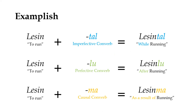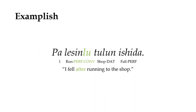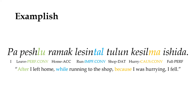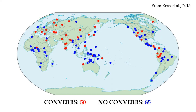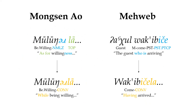There might be separate forms to imply that the two clauses happened simultaneously, or sequentially, or that one clause happened as a result of the other. Using these sorts of converb constructions, we can string together as many clauses as we want. About 35% of the world's languages use converbs in some capacity, but the exact way that they're used can vary significantly from language to language.